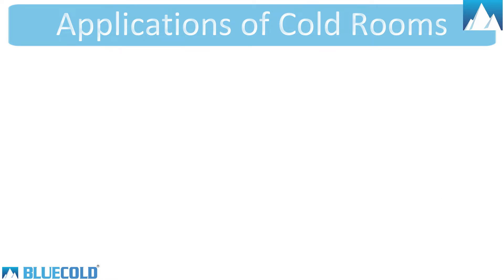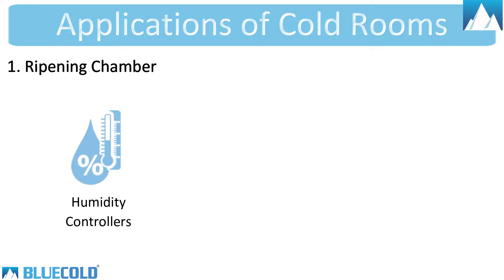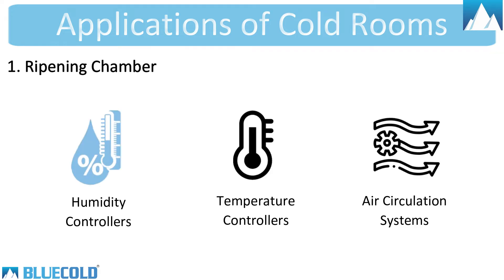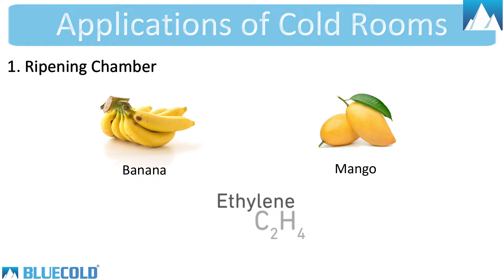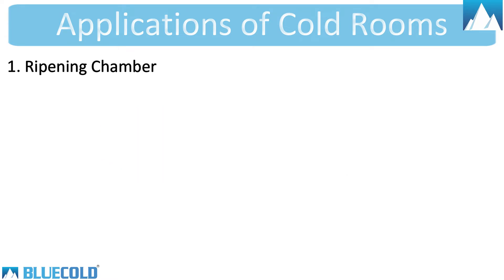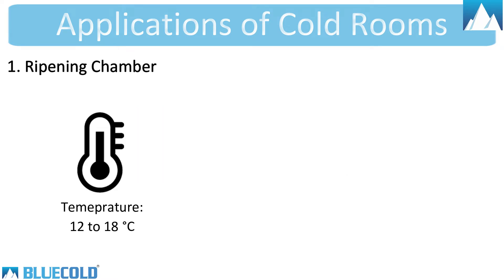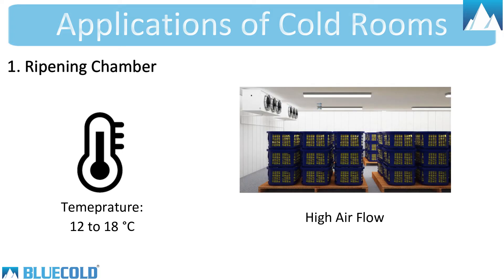Now let's look at different types of applications. 1. Ripening Chamber — it is a chamber equipped with humidity controller, temperature controllers and air circulation systems. Fruits like banana and mango are ripened through the use of ethylene gas generation. They maintain a room temperature of 12 to 18 degrees Celsius and require high airflow.